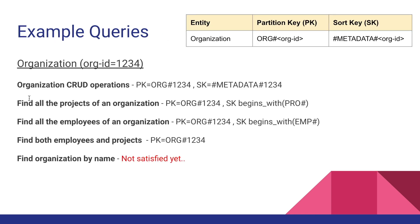To perform CRUD operations on an organization, we need to uniquely identify it using both the partition key and sort key. For example, if the organization ID is 1234, the partition key is ORG#1234 and the sort key is #METADATA#1234. Since we provide exact values for both keys, there is only one matching record — because the composite primary key is unique — allowing us to perform all CRUD operations on that organization.